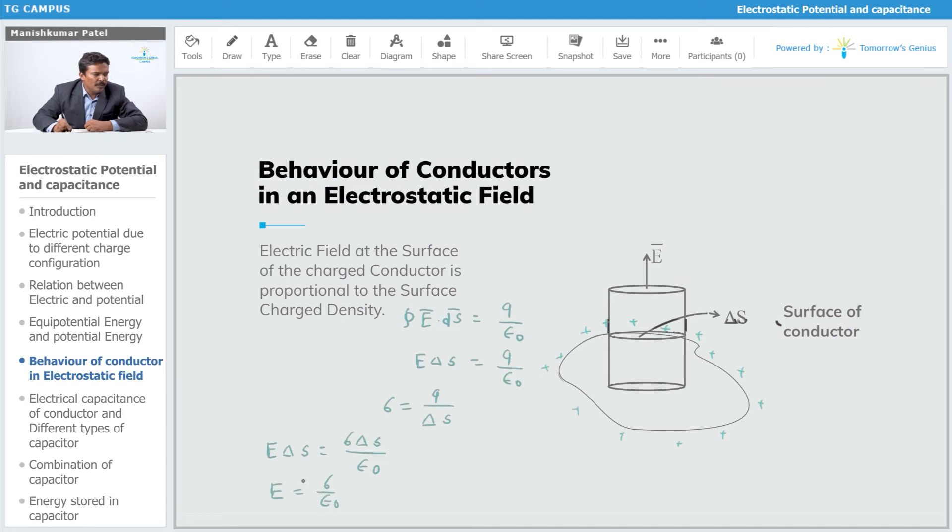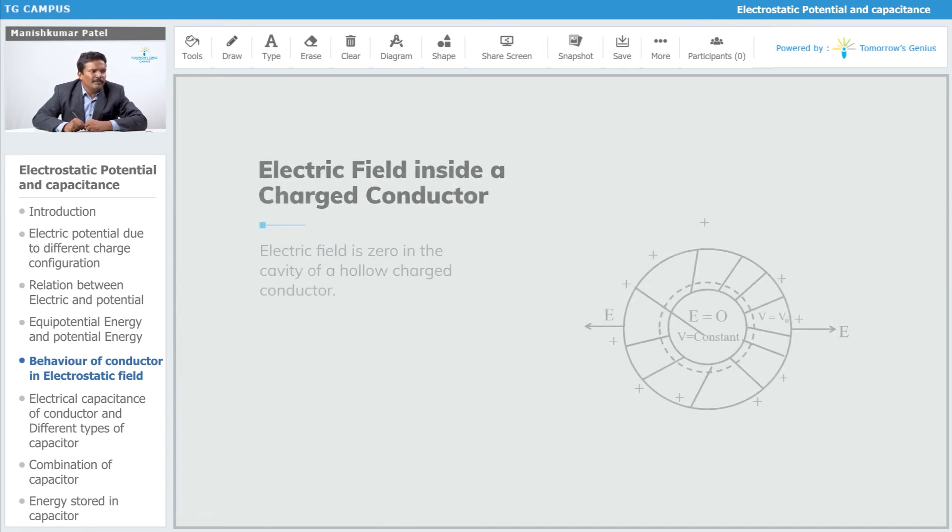Also, you can define the direction with the help of n̂, the unit vector which is perpendicular to this surface. So that is the expression for the electric field because of this conductor that you can find with the help of Gauss's law.